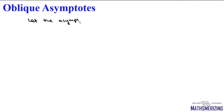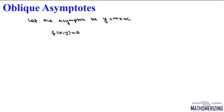Now we'll learn a general method to find oblique asymptotes. We'll say let the asymptote be y equals mx plus c for the function f(x, y) equals 0.